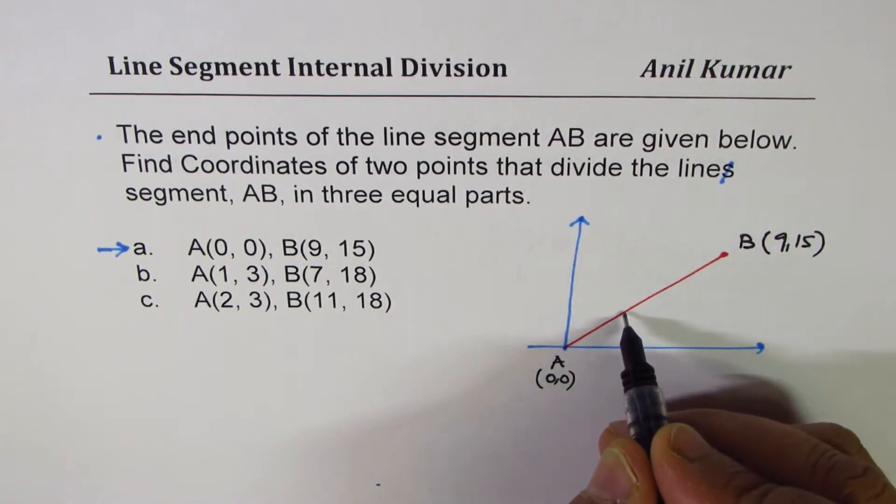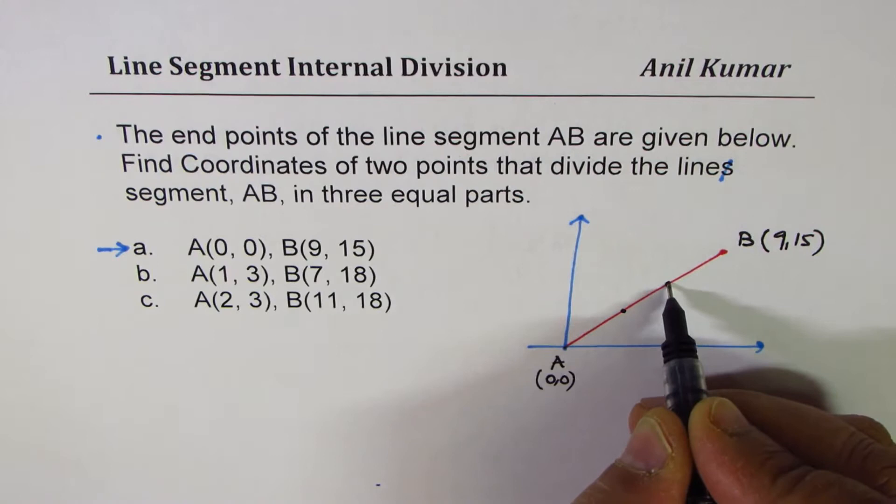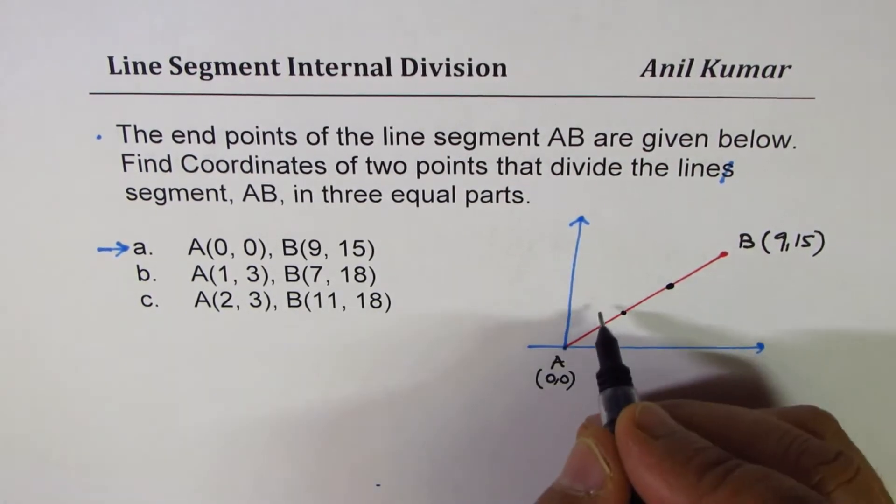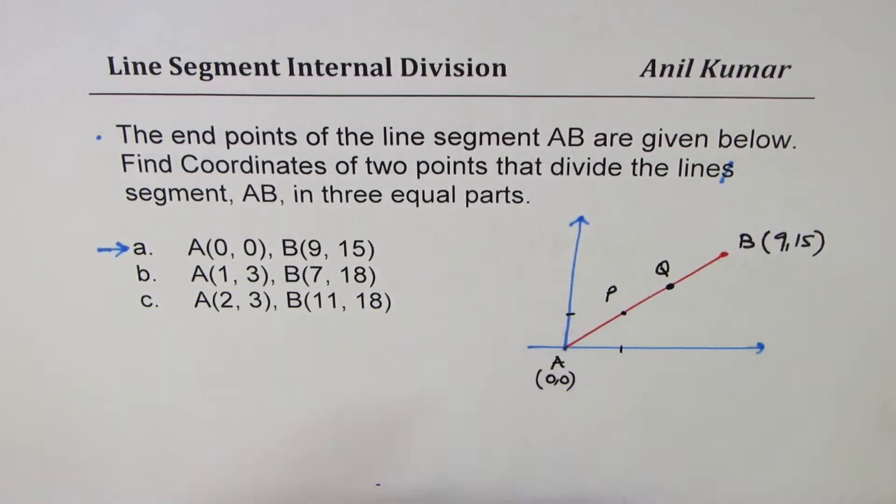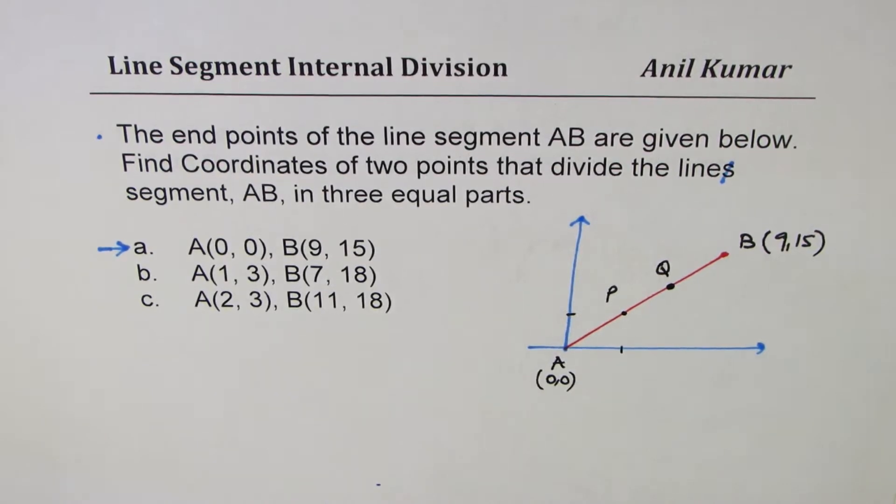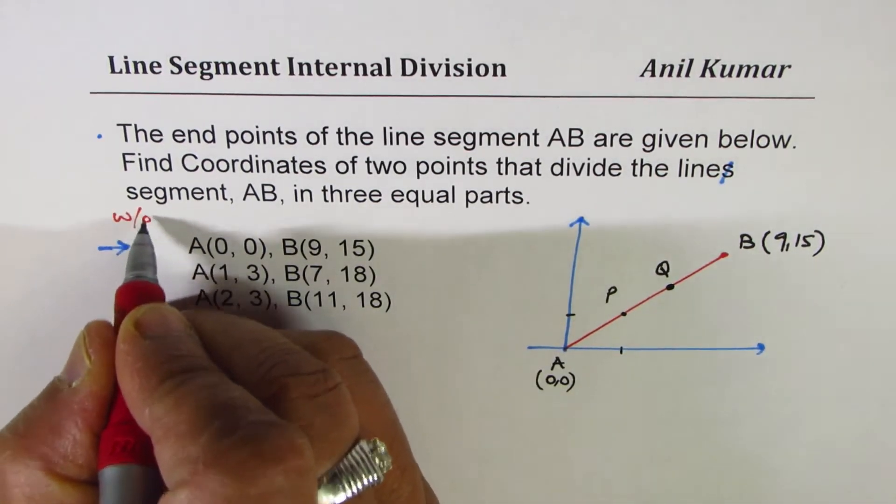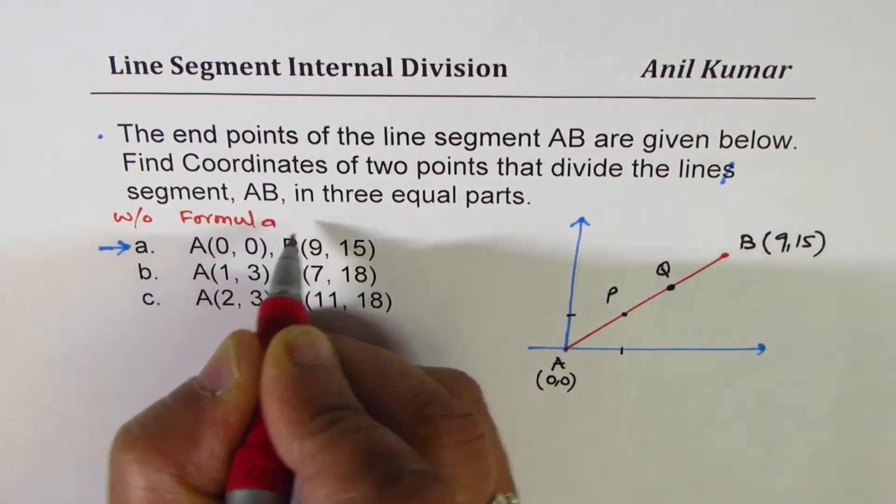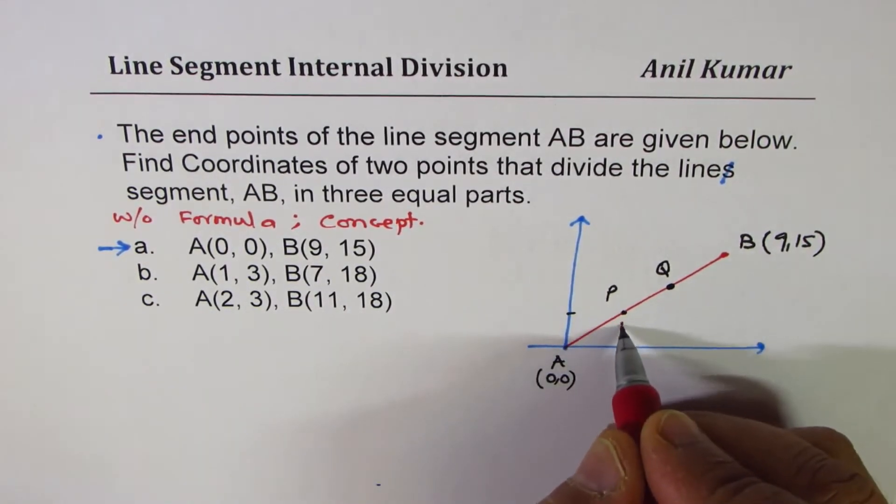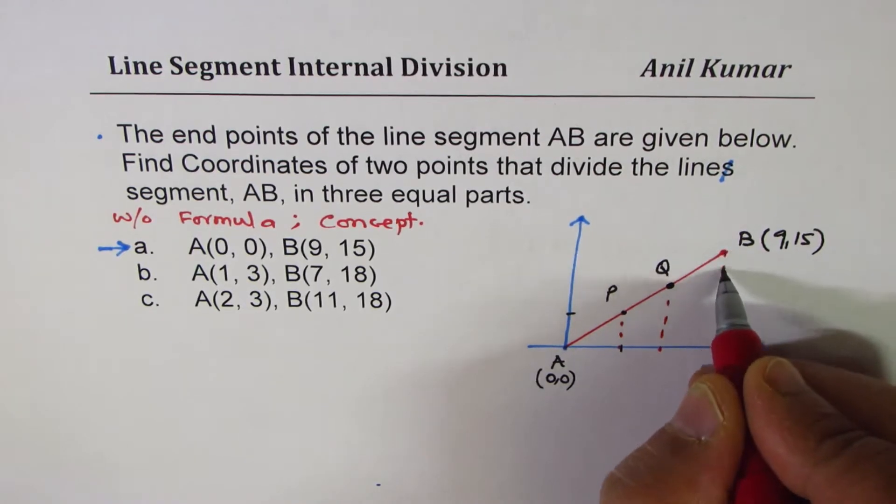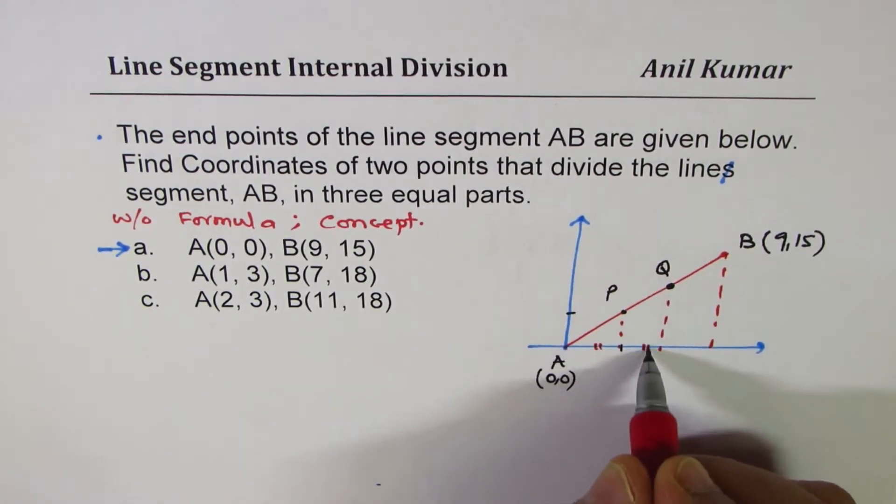We are looking for two points, let's say P and Q, which divide this into three equal parts. Let's call this point as P and this point as Q. The idea is to find x and y values of these points. The concept which I am going to discuss, I will solve this question without any formula, using a concept. We will do without formula. We will use a concept. We are just saying let's divide it to three equal parts. That really means that these parts are equal.